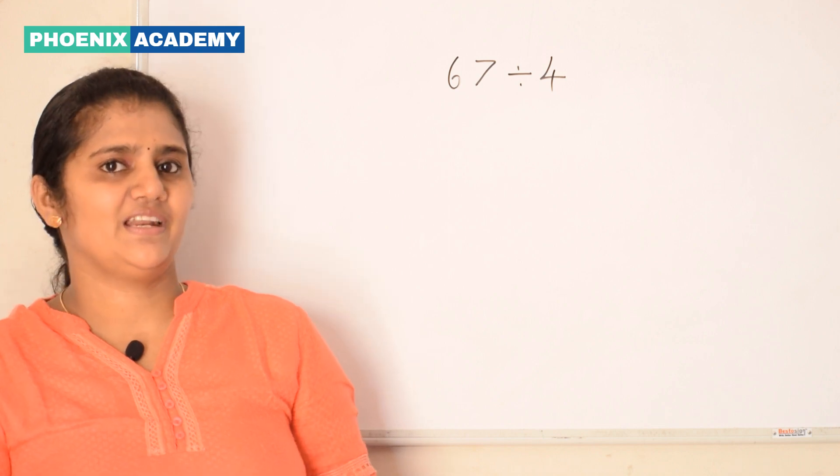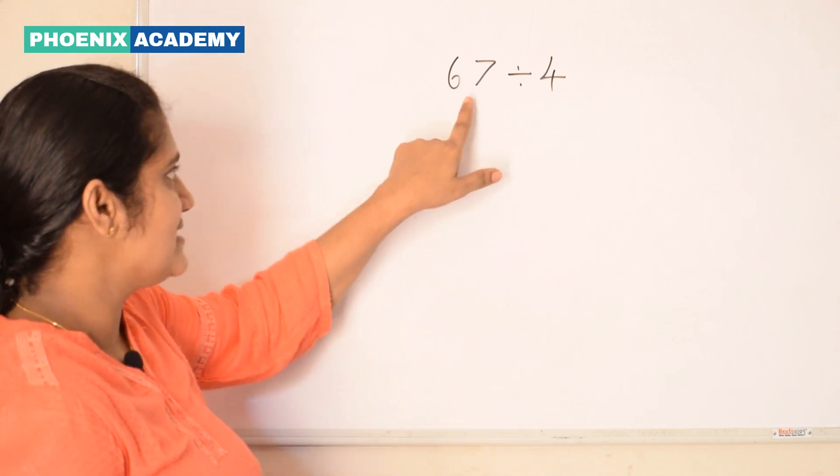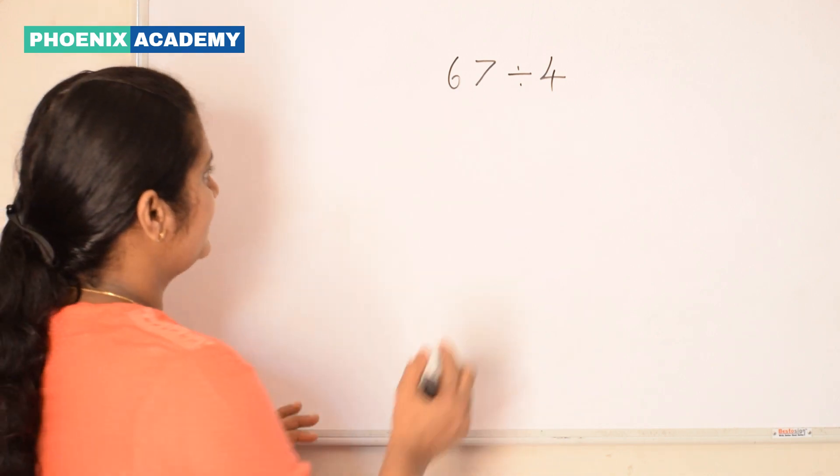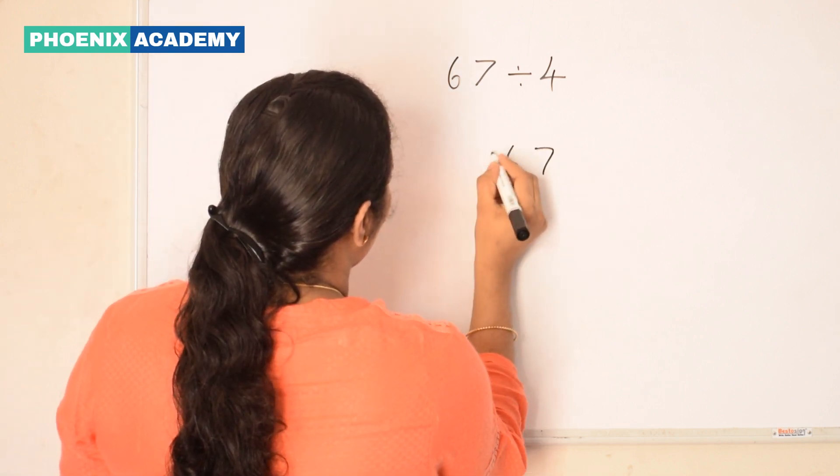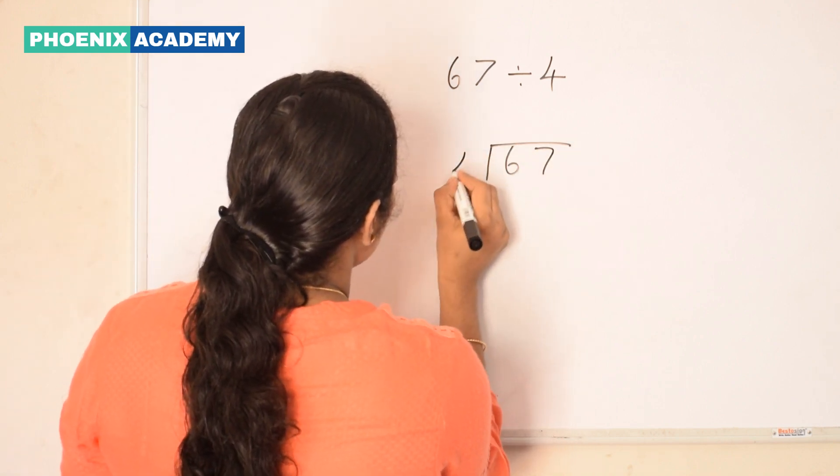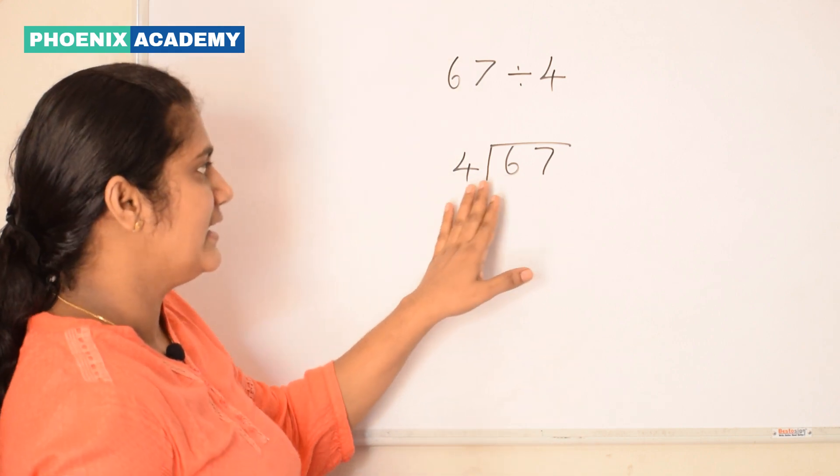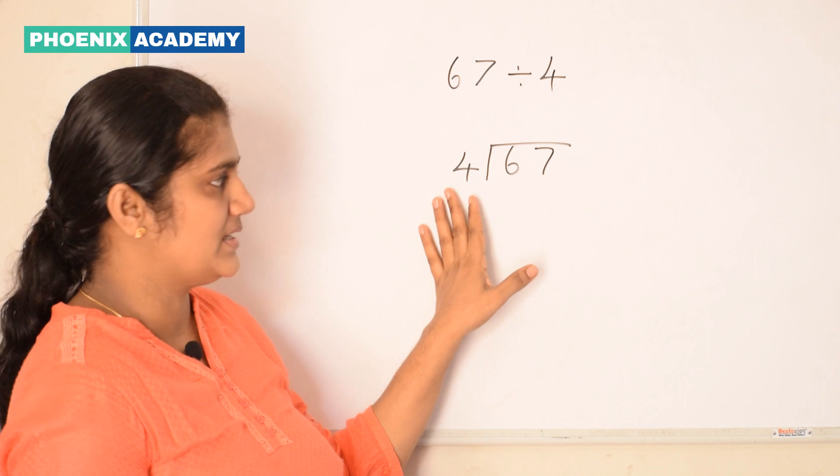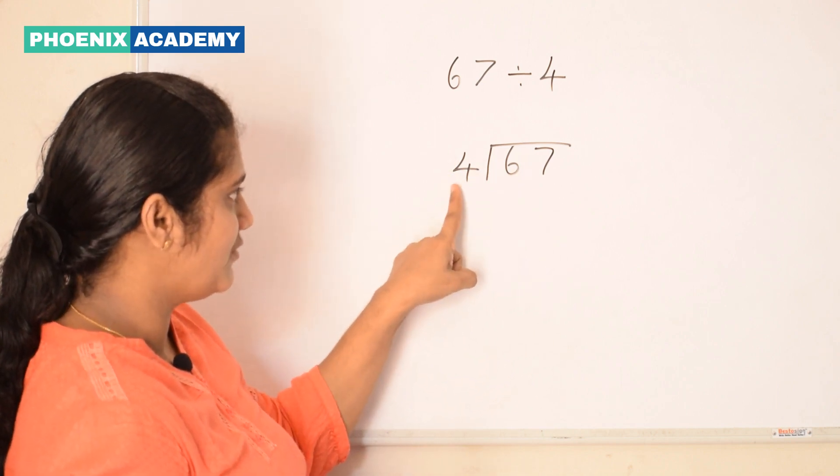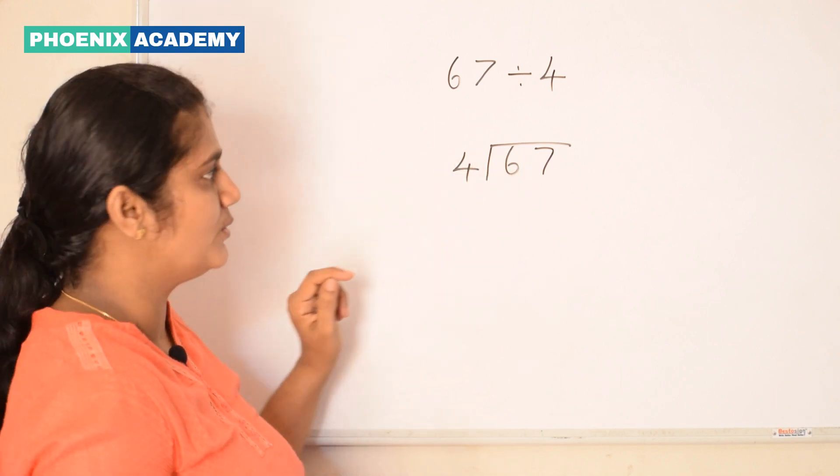Division with regrouping. Let's divide 67 by 4. Arrange the numbers like this and check if the first number is greater than or equal to the divisor. Here 6 is greater than 4, so we divide 6 by 4.